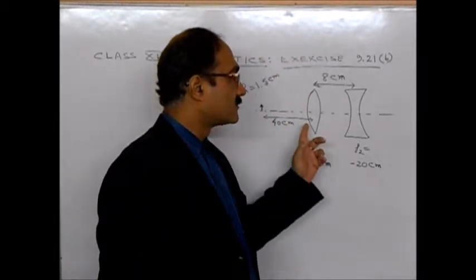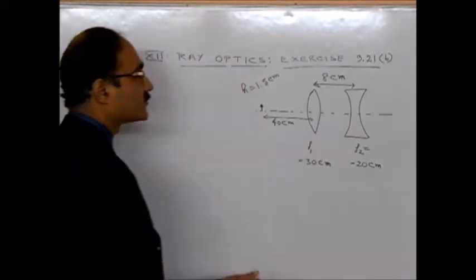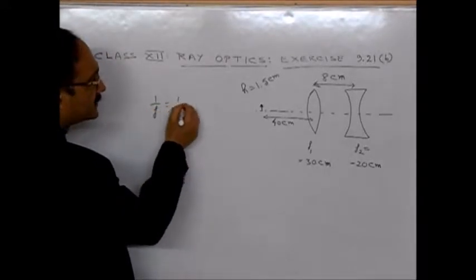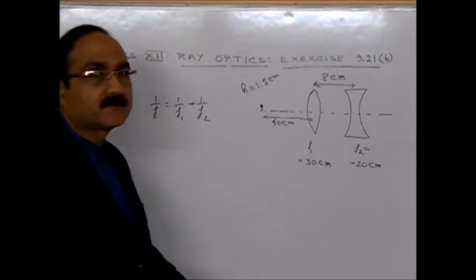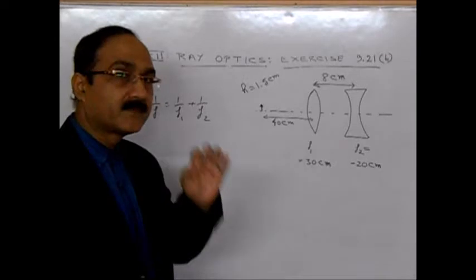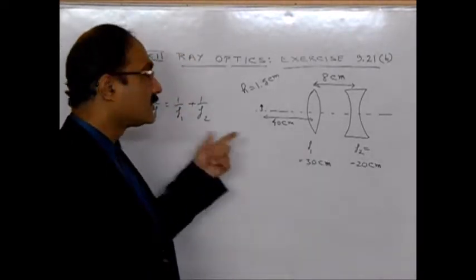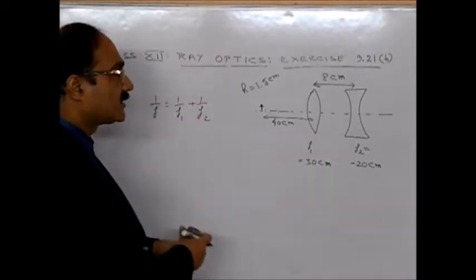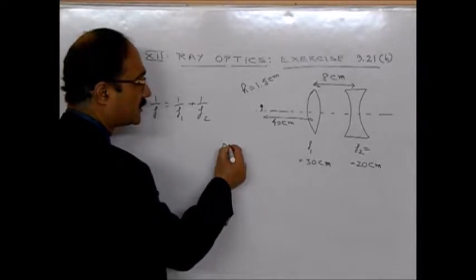In a problem like this, where there are two lenses, the first thing that comes to our mind is the equation 1 by F equals 1 by F1 plus 1 by F2 for a combination of two lenses of focal length F1 and F2. But we should remember that in this question, this cannot be used. Why?